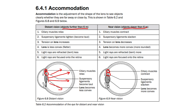Therefore, the lens becomes more convex, making it more round. This causes light rays to be refracted more, therefore they are bent more. The light rays are then focused on the retina, and a clear image is then produced for near objects. And that's all for this video. Thank you.